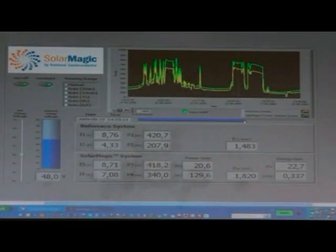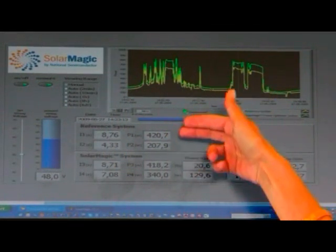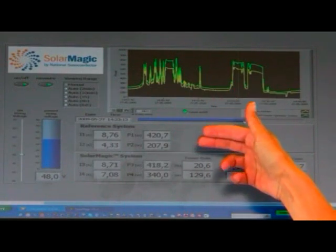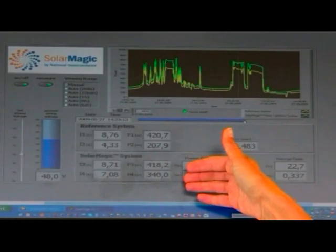Here you see the output of the strings. These two numbers here represent the output of the unassisted strings, and these two numbers represent the output of the assisted strings.